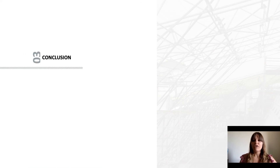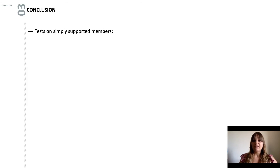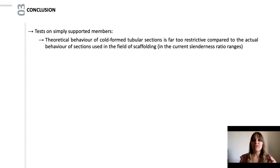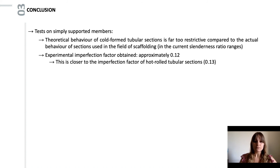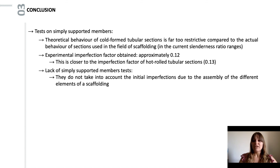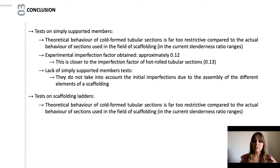I will now present the conclusion. A first test campaign was carried out on simply supported elements. We were able to highlight that the theoretical behavior given in the European Standard for scaffold structures is very far from reality, which is a disadvantage in the resistance verification of the elements. The statistical study shows that an imperfection factor of 0.12 would better reflect the real behavior of these structures. The weakness of this test on simply supported elements is that they do not make it possible to measure the imperfections of a structure in its entirety. The second test campaign therefore concerns scaffolding ladders, which allowed us to take these imperfections into account.